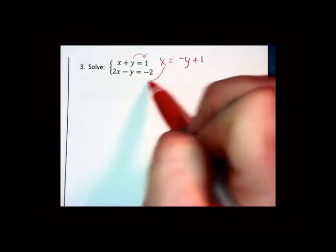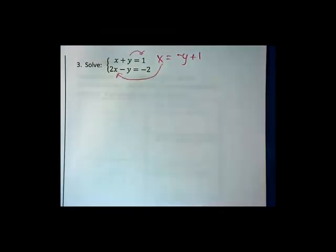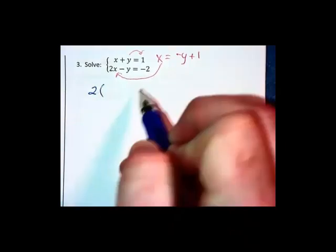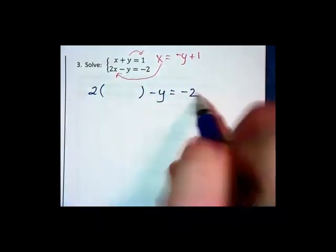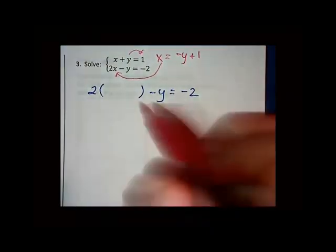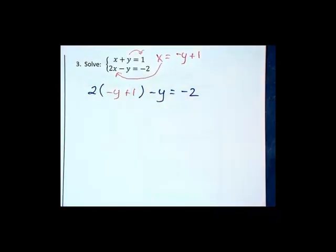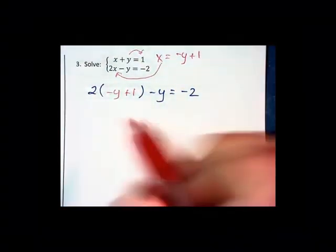Then that first equation can be substituted into the second equation. That gives us 2 times what we're substituting in minus y equals negative 2. I'm going to do this in a second color to emphasize what is actually getting substituted in.